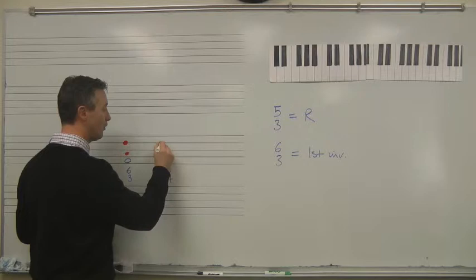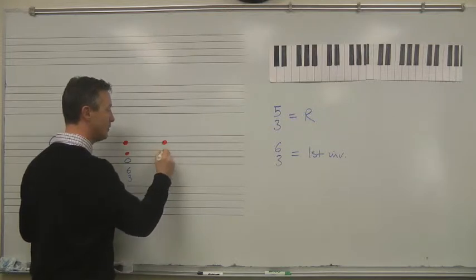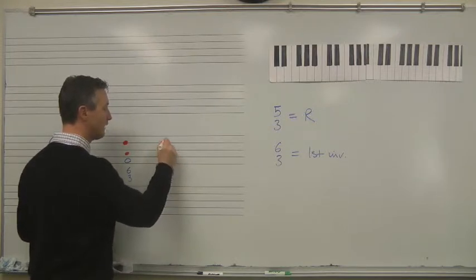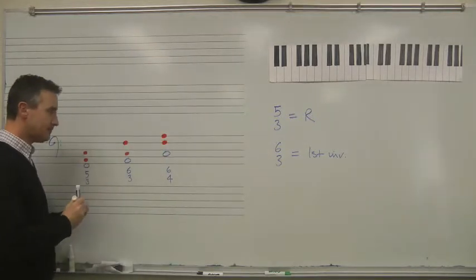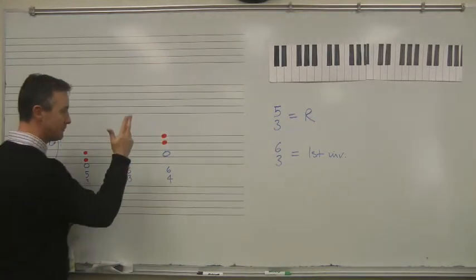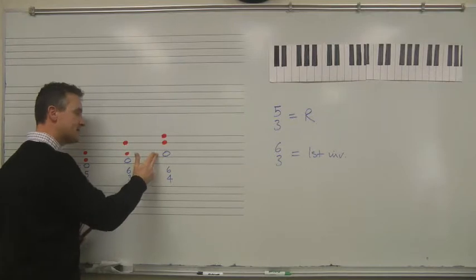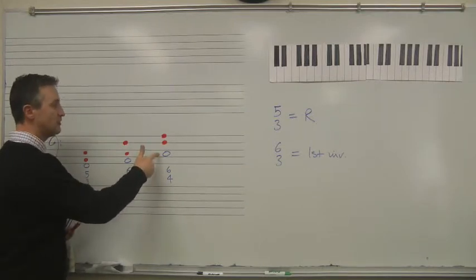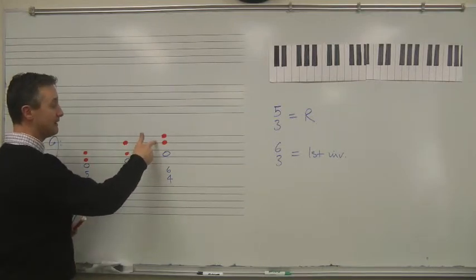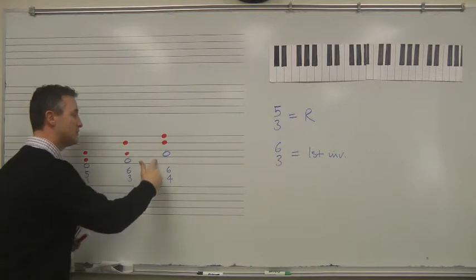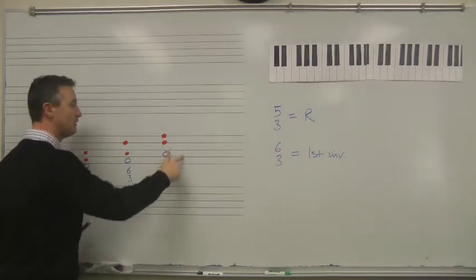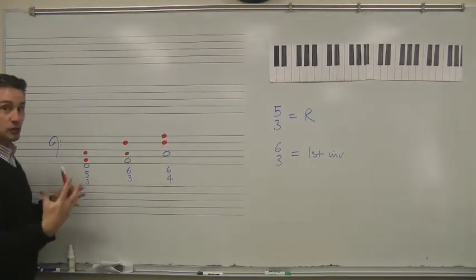1-2-3-4 gives me the note F. 1-2-3-4-5-6 gives me the note A. Again, you count from the given note. You've got a bass note with figures. So you count up from there, and it gives you two other notes.